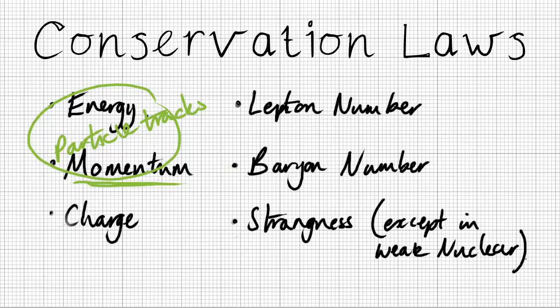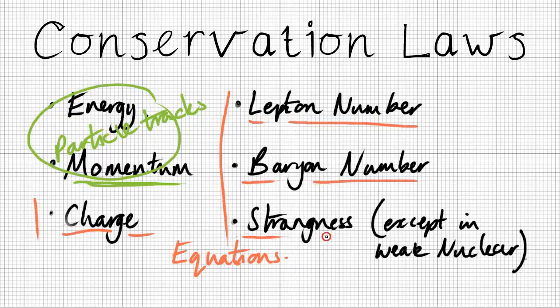These next ones, one, two, three, four, they're going to be applied to the equations, nuclear equations. So I'm going to give you some examples now. I'm not going to do the particle tracks bit, because I've done that on a previous video. But we're just going to need to remember to apply the conservation of charge, conservation of lepton number, baryon number, and strangeness, except to weak interactions.